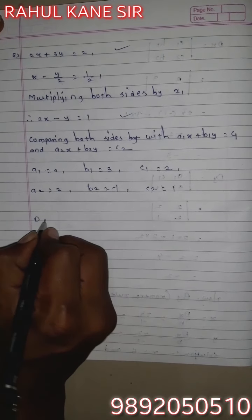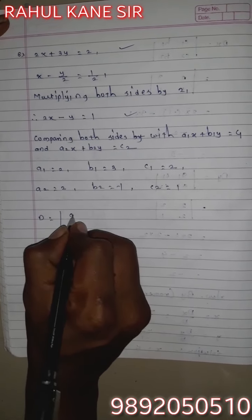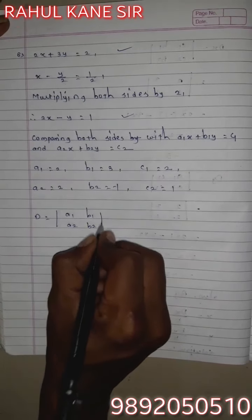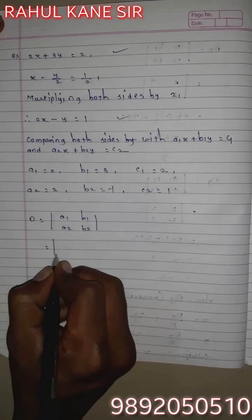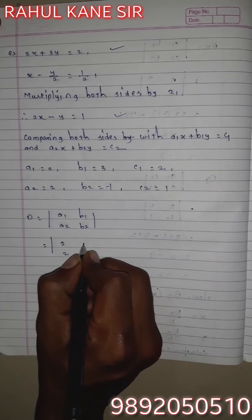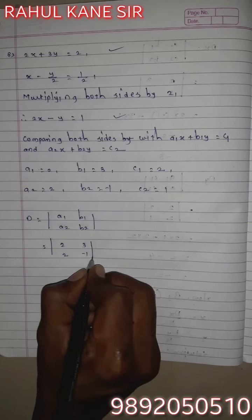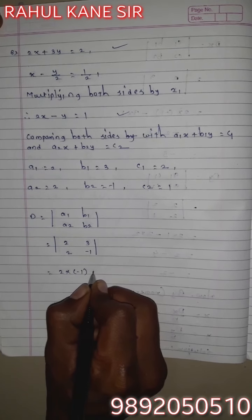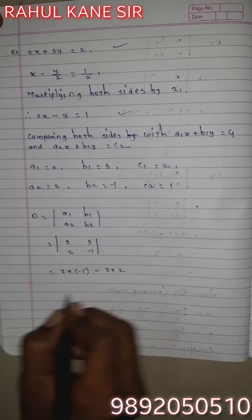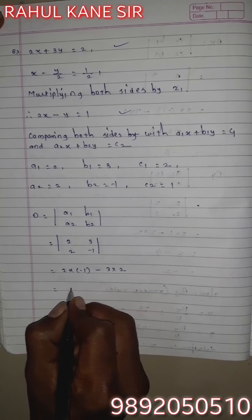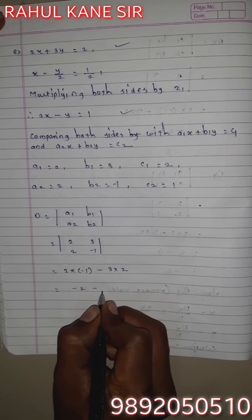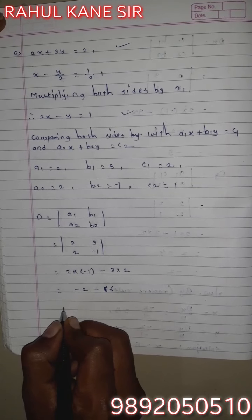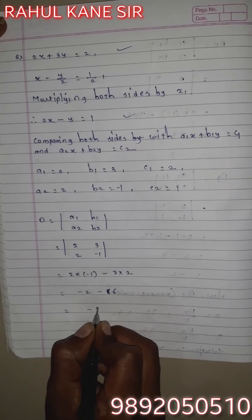So D equals |a1, a2, b1, b2| equals |2, 2, 3, -1|. By cross multiplication: 2×(-1) minus 3×2. 2 times -1 is -2, 3 times 2 is 6. So -2 minus 6 equals -8.